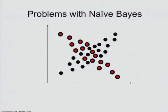What is not perfect with Naive Bayes? It seems like a really good classifier. So suppose you had a situation like this.